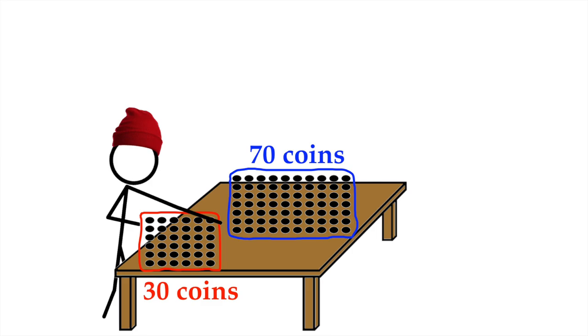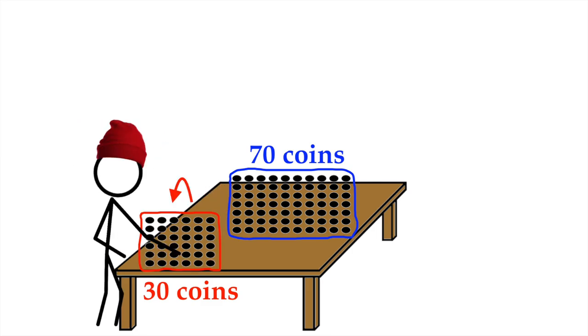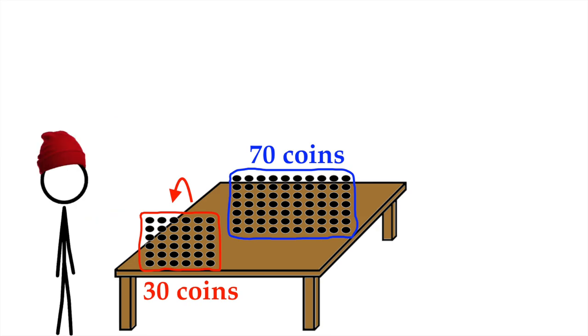Because then, we pick up all the coins from the small pile and flip them over. Yeah, we flip all of those 30 coins over. And believe it or not, it is now guaranteed that both piles will have the same number of heads.